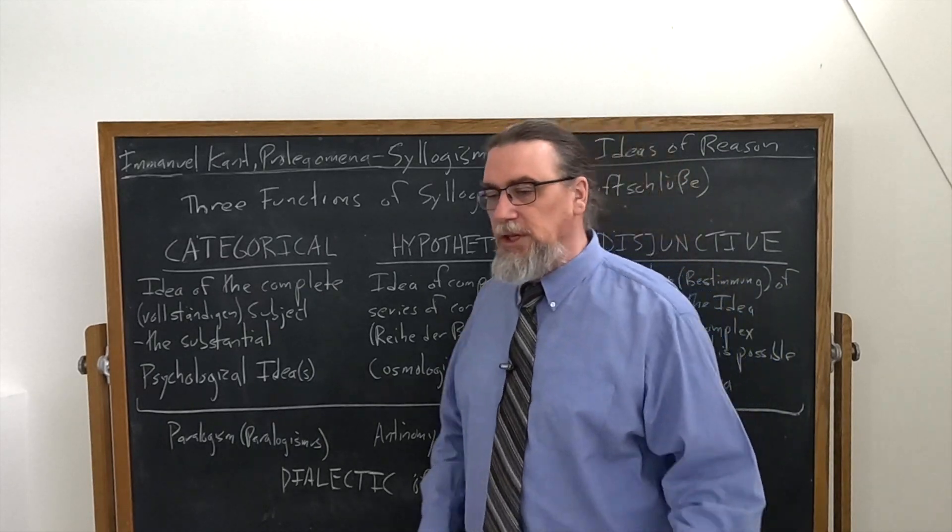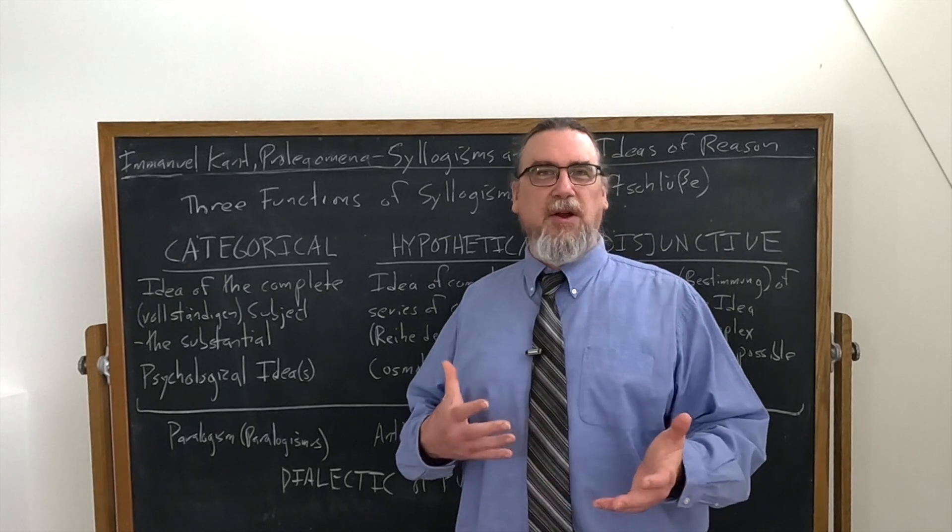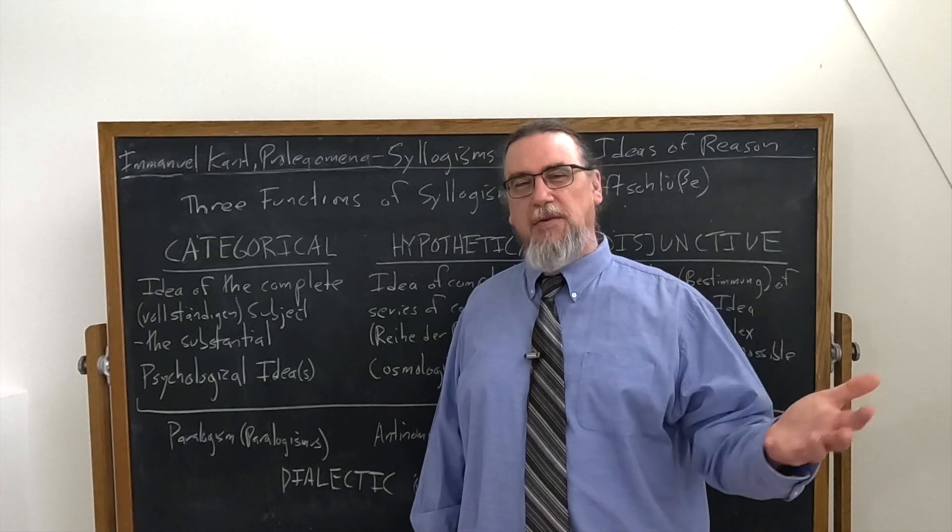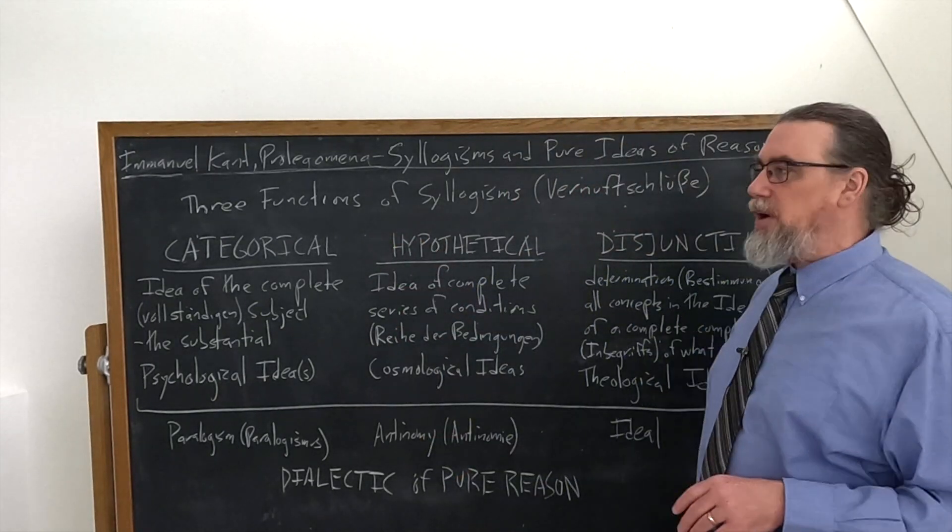So categorical syllogisms essentially tell us what something is. Example of that: all men are mortal, Socrates is man, therefore Socrates is mortal. I think that's pretty easy to wrap your head around.